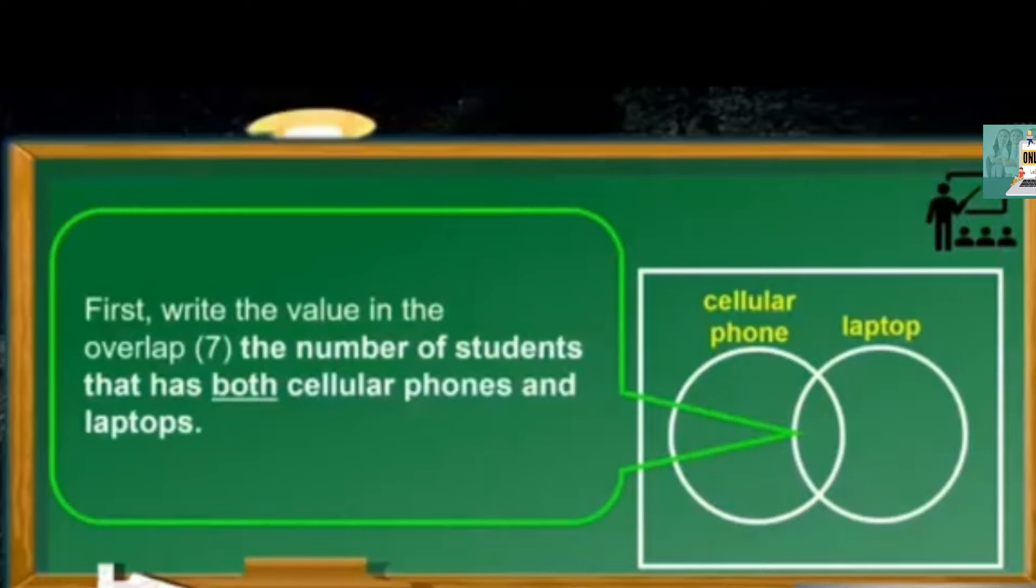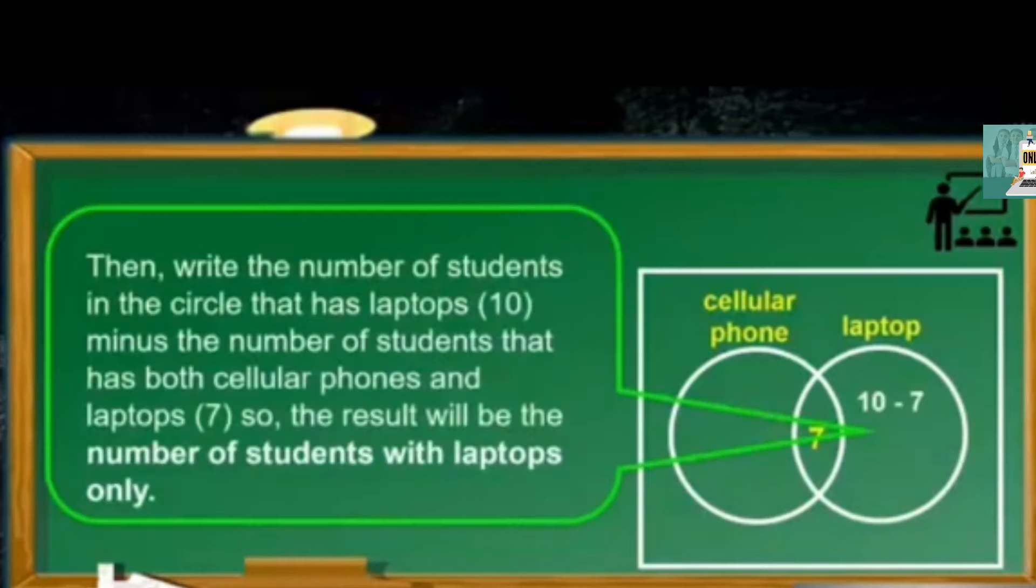First, write the value in the overlap, which is 7, the number of students that has both cellular phones and laptops. So that is 10 minus 7. The result will be the number of students with laptops only. That is 3.